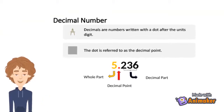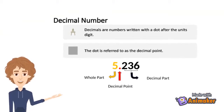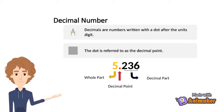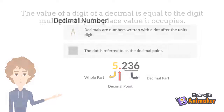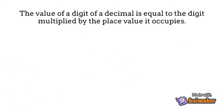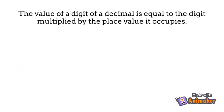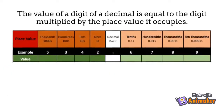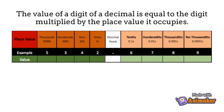Decimals are numbers written with a dot after the unit's digit. The dot is referred to as the decimal point. The value of a digit of a decimal is equal to the digit multiplied by the place value it occupies.